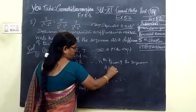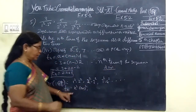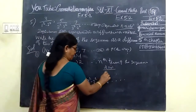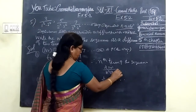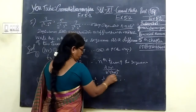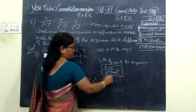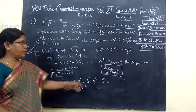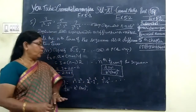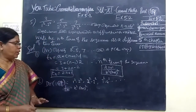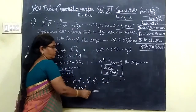So the general term is: 2n plus 1 by n squared times n plus 1 whole square. That is n equals 2n plus 1 divided by n squared times n plus 1 whole square.